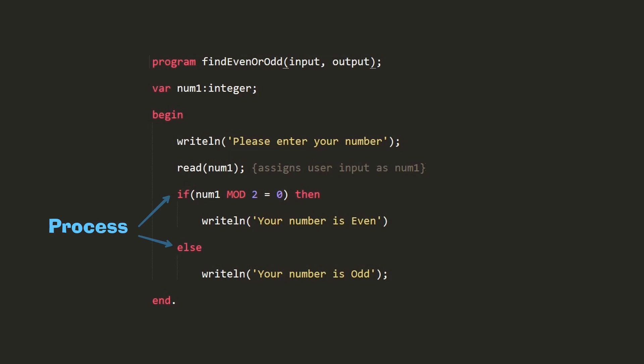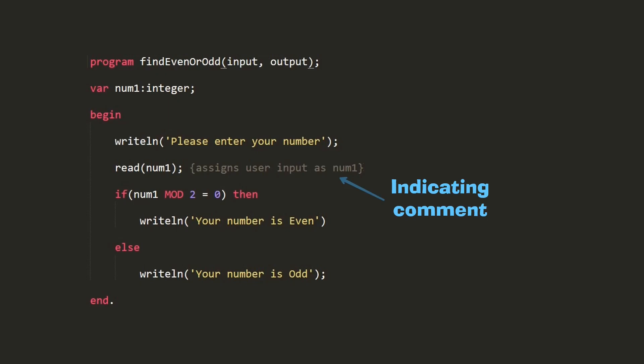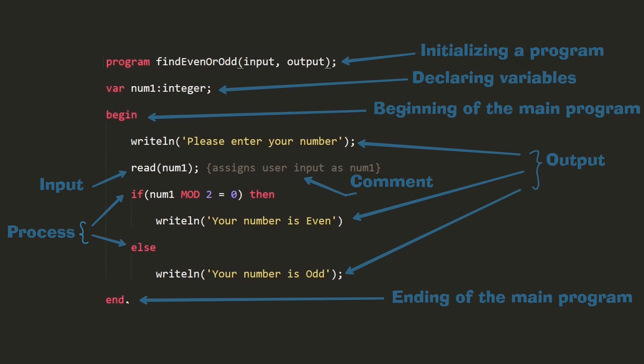Another main component is comments. Comments are which the compiler doesn't compile when our program is executed, which are used to make the source code easier for humans to understand.